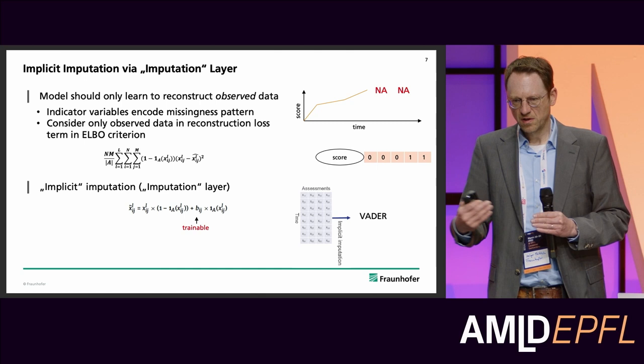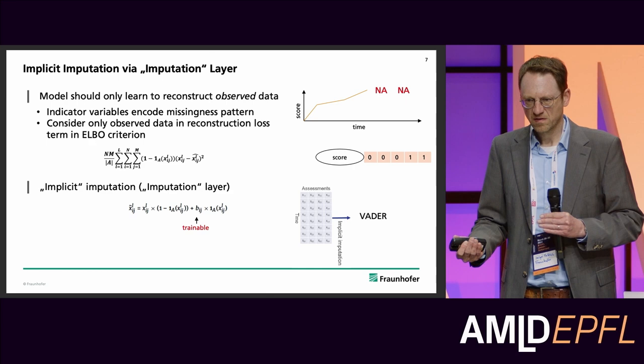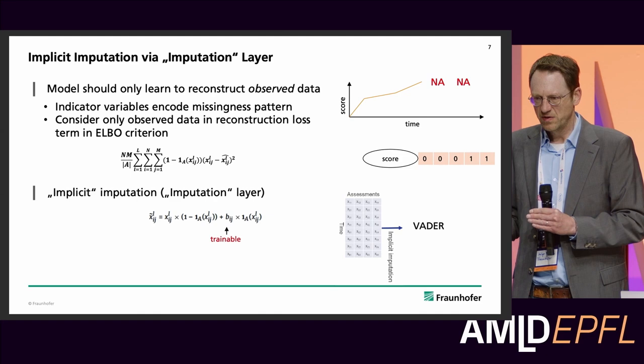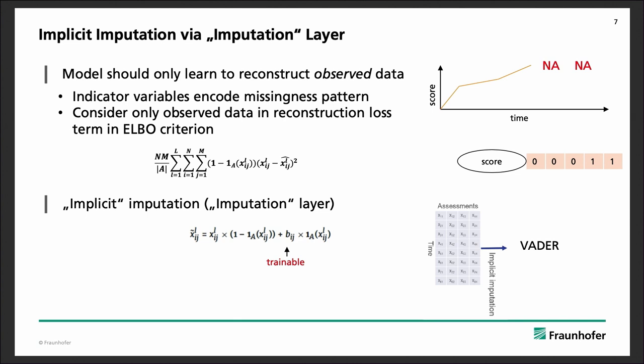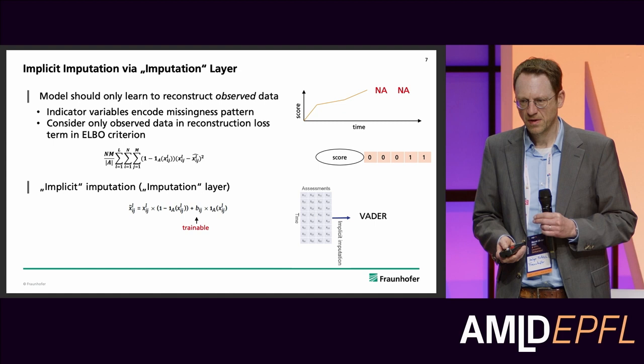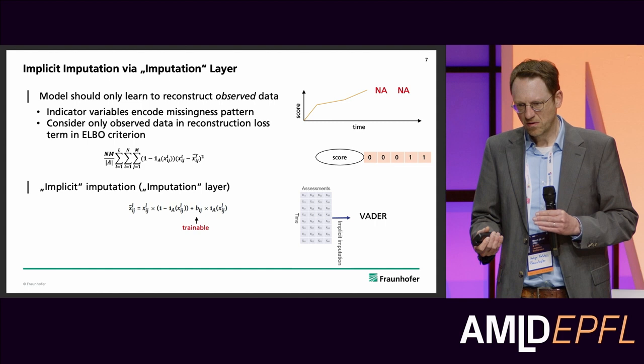For example, you might have a certain score observed over time where the last two time points are missing. We introduce a missingness indicator — ones for observed data and zeros for missing — and based on this missingness mask we can modify the reconstruction loss part of the ELBO criterion.